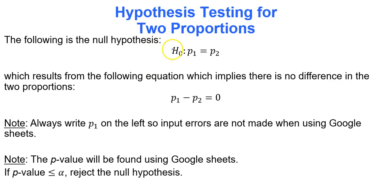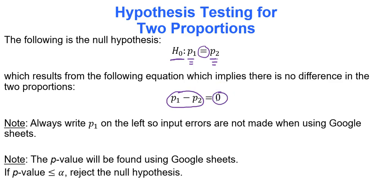The null hypothesis h-naught is always equal to, so we say the proportion for group one equals the proportion for group two. This comes from the idea that if two things have no difference, subtracting them gives zero. It's also important to always write p sub one on the left to avoid errors when inputting data.